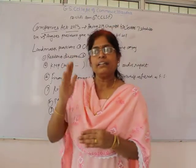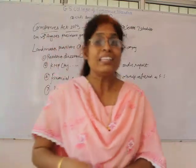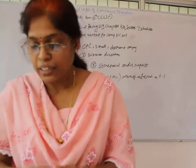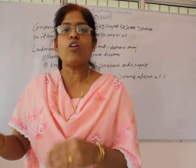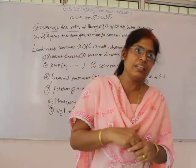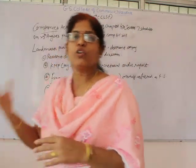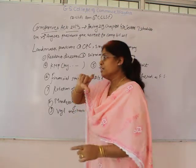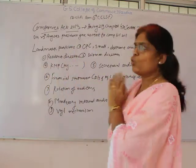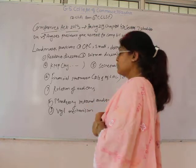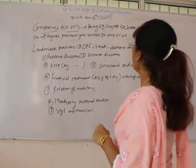Considering the rules and regulations, the assent was given by the President of India on 29th August 2013. From the next day onwards, the company bill known as the 2011 Company Bill got converted into the Companies Act 2013, which is the existing company act even now. The Companies Act 2013 has 29 chapters, 470 sections, and 7 schedules.